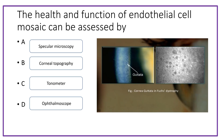Fifth question: the health and function of the endothelial cell mosaic can be assessed by which technique? Option A: specular microscopy; option B: corneal topography; option C: tonometer; option D: ophthalmoscope. The answer is specular microscopy. It can also be viewed by the slit lamp, but specular microscopy gives a more functional and detailed assessment of the corneal endothelial layer.